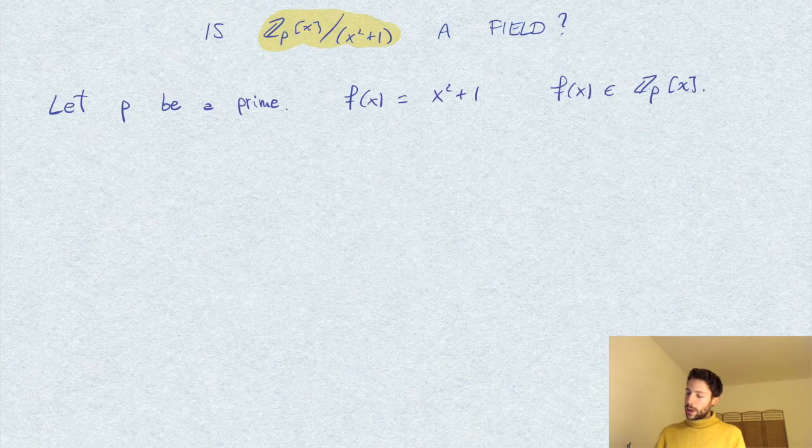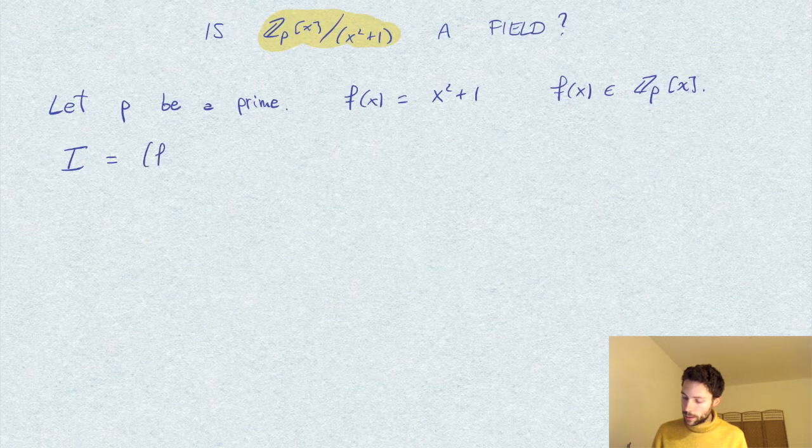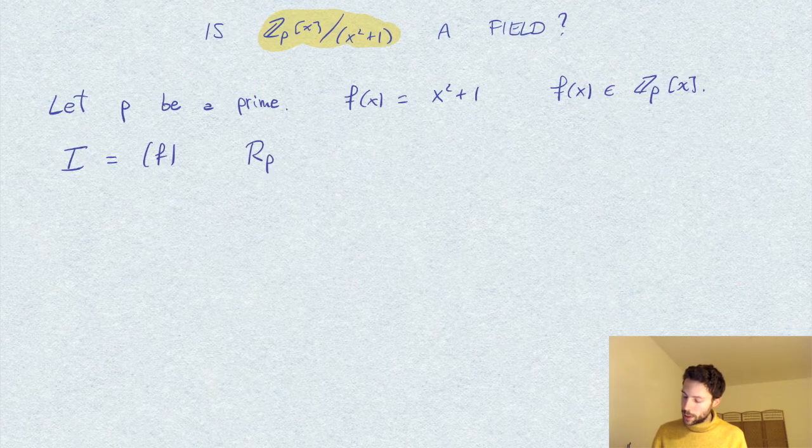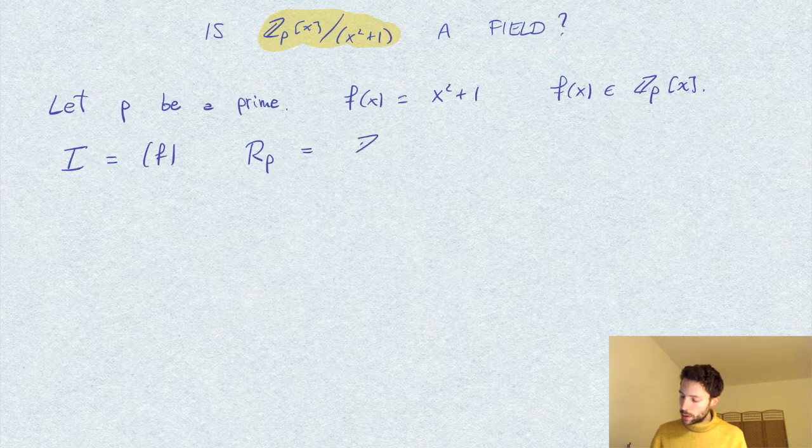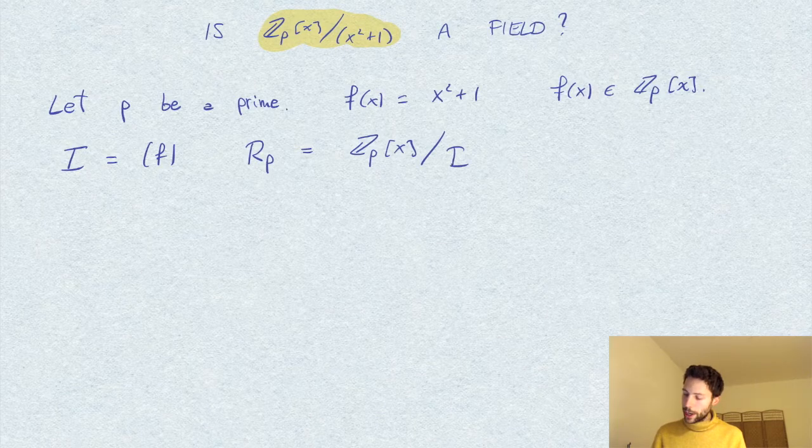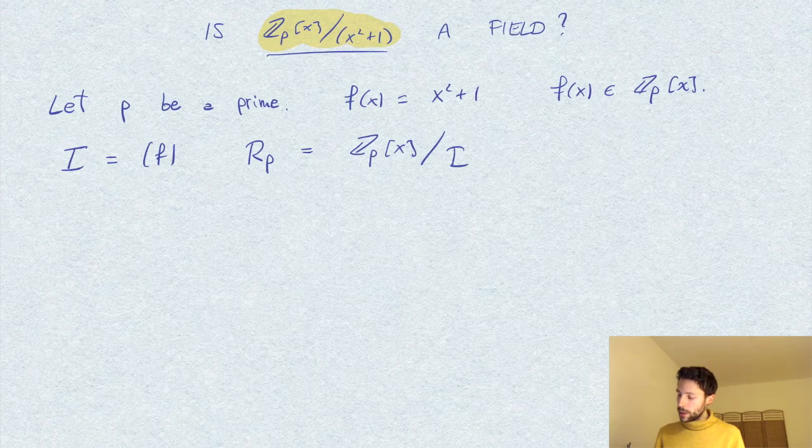Now I want to form the quotient, so I consider the ideal generated by f and denote by R_p the quotient Z_p[x] by this ideal. Another way of writing this quotient ring.